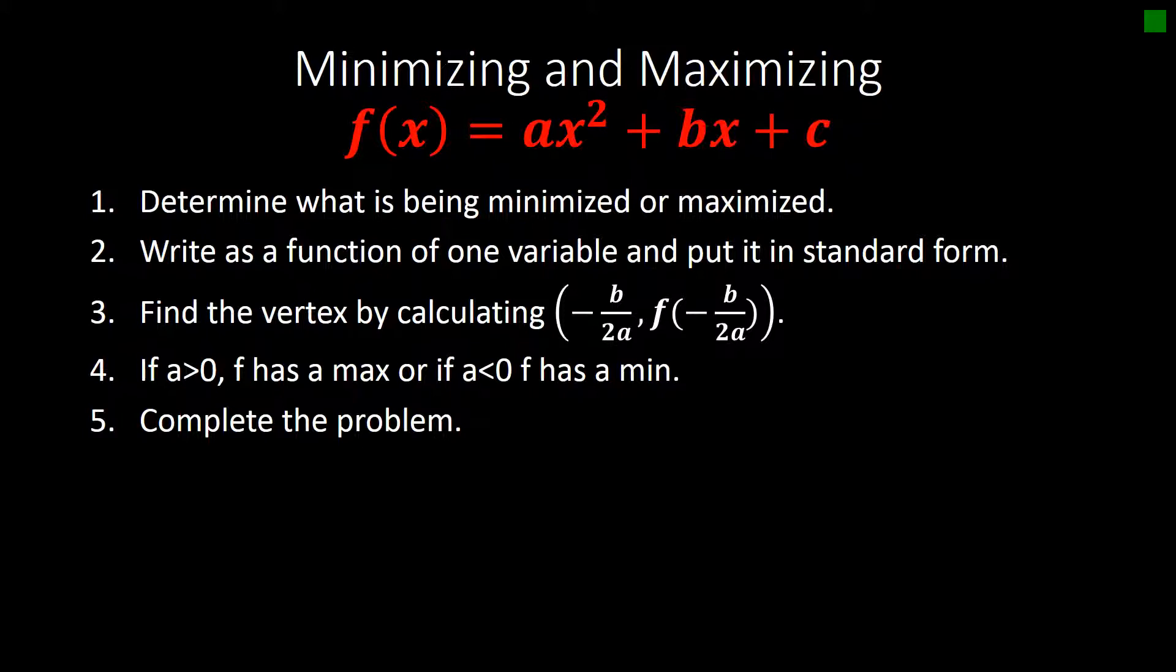So with minimizing and maximizing, if we have an equation in general form f of x equals ax squared plus bx plus c, then we can determine what's being maximized or minimized by reading through the problem. Number two, we can write a function of one variable and put that in standard form.